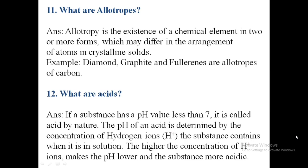Eleventh question: what are allotropes? Allotropy is the existence of a chemical element in two or more forms, which may differ in the arrangement of atoms in the crystalline solid. For example, diamond, graphite, and fullerenes are allotropes of carbon.